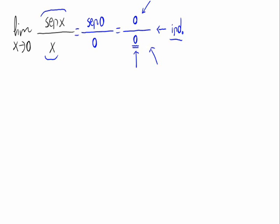Indeterminations means that if we obtain, like this case, a 0 divided by 0, this is not the result of the limit.